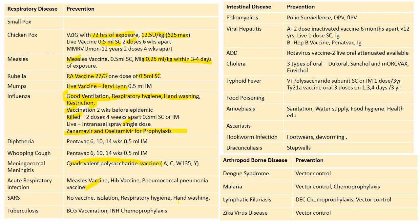Tuberculosis: BCG vaccination and isoniazid chemoprophylaxis. Poliomyelitis: polio surveillance, OPV, and fractional IPV. Viral hepatitis: two-dose inactivated vaccine six months apart for age greater than 12 years; live one-dose subcutaneous option. Immunoglobulin can be given. Hepatitis B vaccine in Pentavac; hepatitis B vaccine given immediately after birth. Immunoglobulin vaccine can be given for prevention of ADD. Rotavirus: two live oral antigen-dose vaccines available.